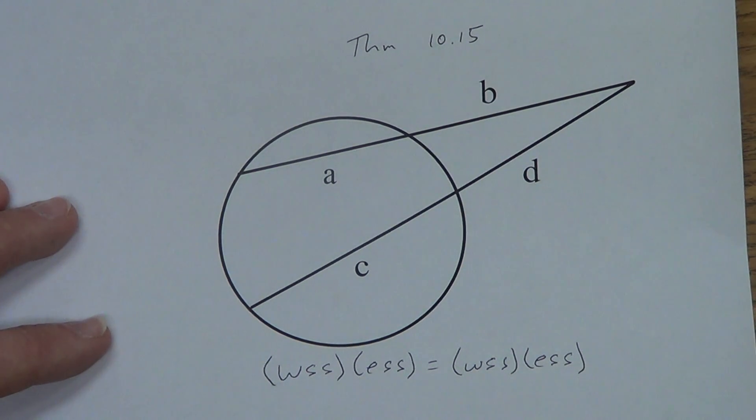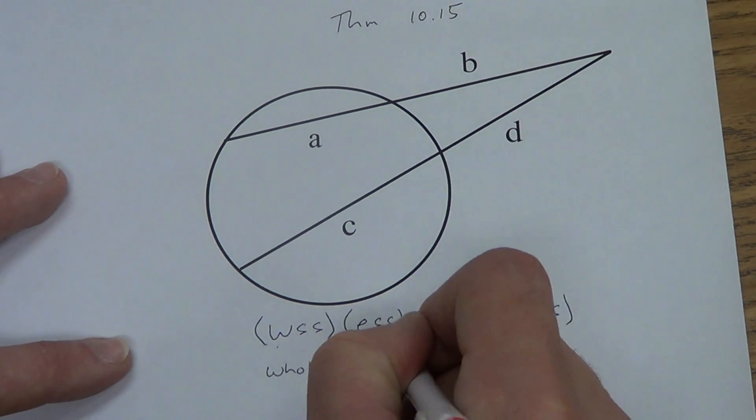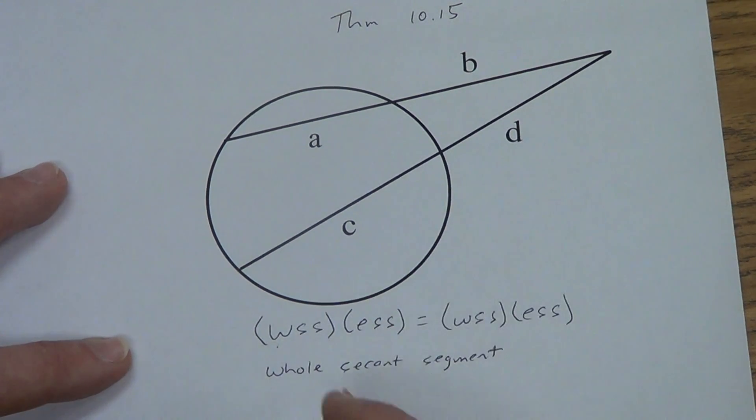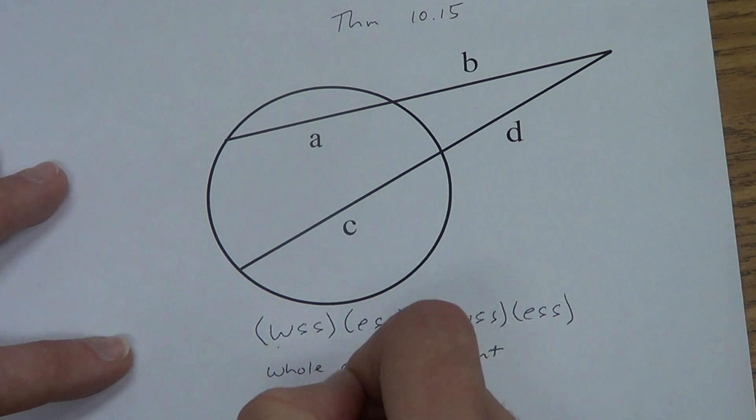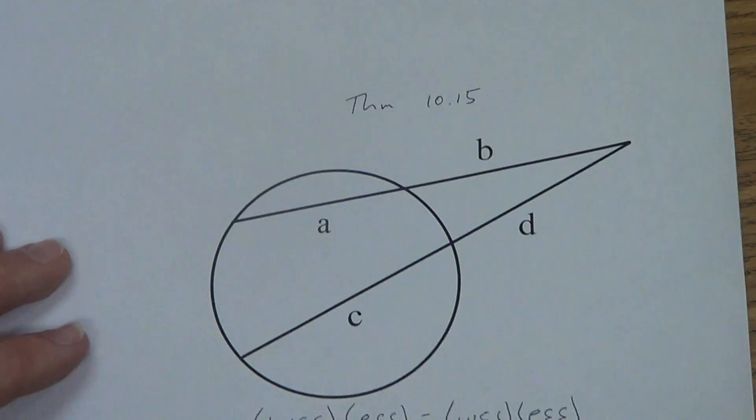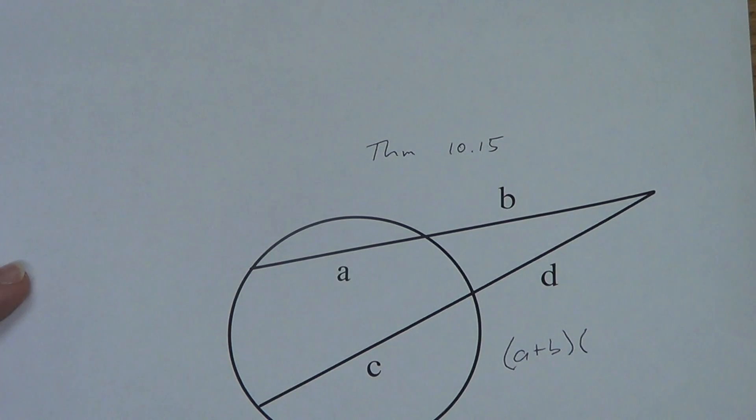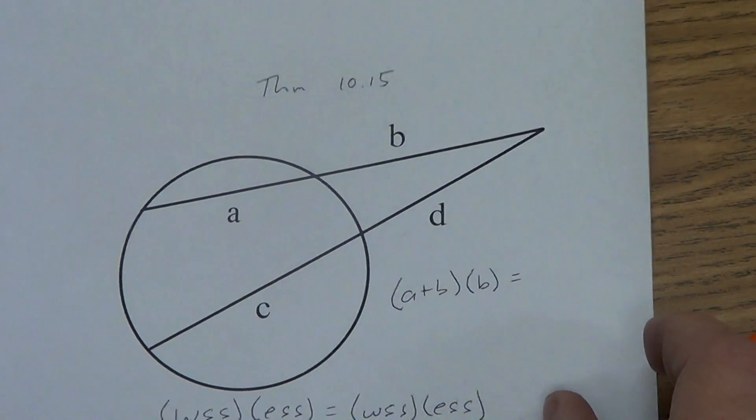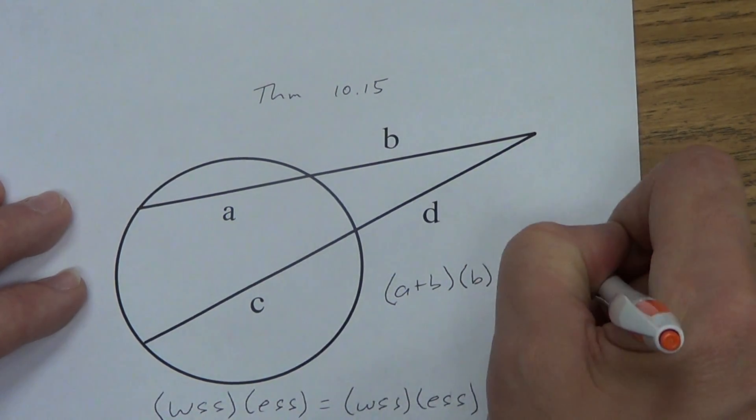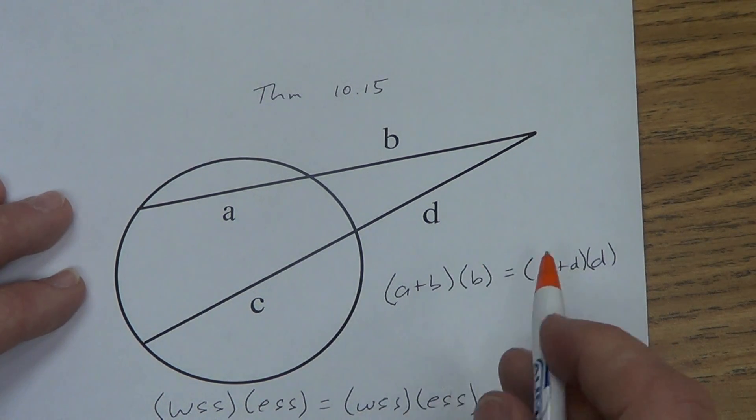This is how we're going to do this one: wss times ess equals wss times ess. Now what in the world do all those letters mean? Your book took five lines, I wrote it down in 12 letters and a couple symbols. Let's talk about this. wss stands for the whole secant segment: whole, w-h-o-l-e, whole secant segment. And then ess is the external secant segment.